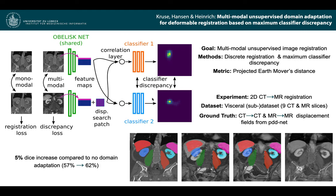We use the concept of discrete registration to capture large deformations in combination with an obelisk feature extractor. To measure the classifier discrepancy for the 2D displacement probability histograms, we propose a new projected earthmovers distance, allowing for accurate and fast EMD calculations.